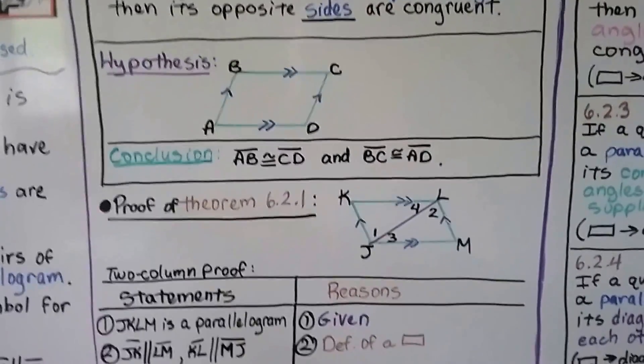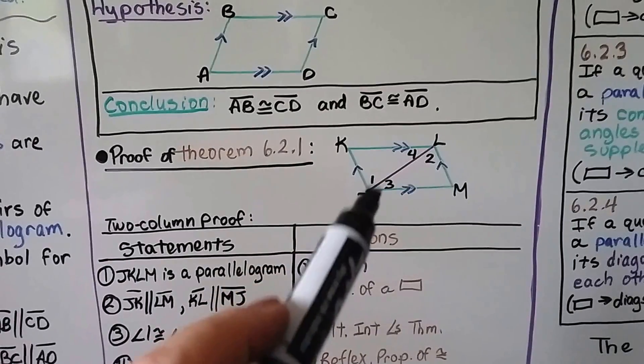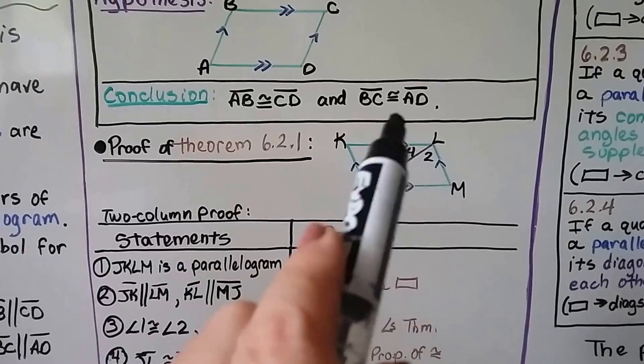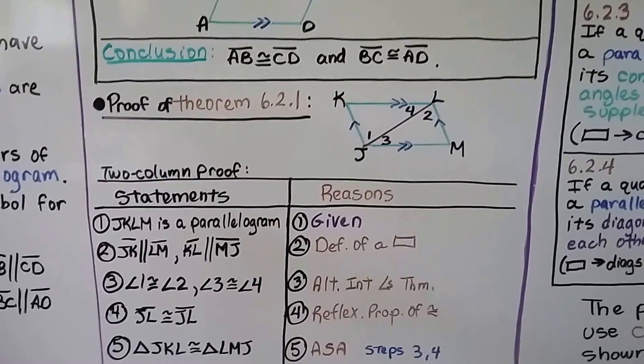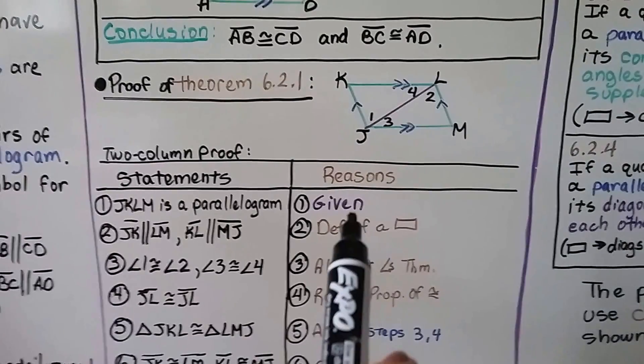We have a proof of this theorem. Here we have JKLM, and we can see it's got a diagonal, and we can see we've got some angle numbers here. We also see the parallel marks. So here's our two-column proof. JKLM is a parallelogram. That's given.